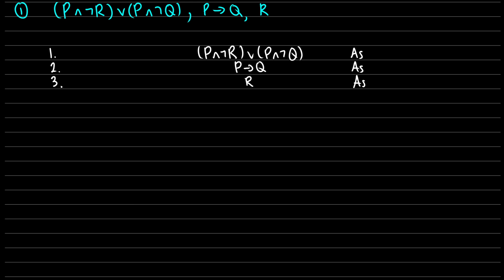So we're going to branch. I'm going to change the color — we'll do green this time. Left branch and right branch: our left branch gives us P and not R; our right branch gives us P and not Q. We get this from line one, using OR decomposition. Remember, each branching path represents one situation — is P and not R true, or is P and not Q true?